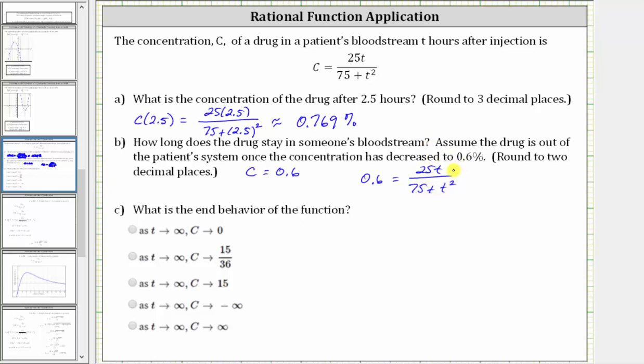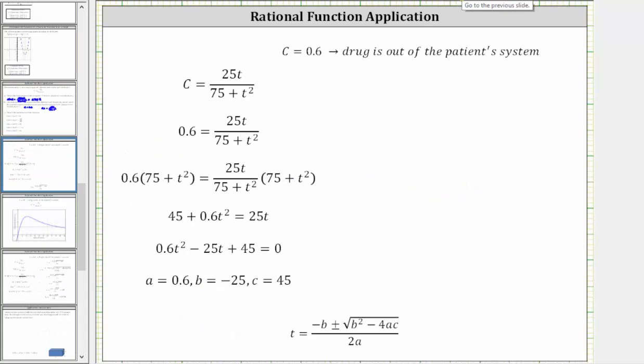Again, we substituted 0.6 for C. Now I need to solve this rational equation. We could cross multiply, but instead, let's multiply both sides of the equation by the denominator of 75 plus T squared. Notice on the right side, 75 plus T squared divided by itself simplifies to 1, leaving us with 25T on the right.